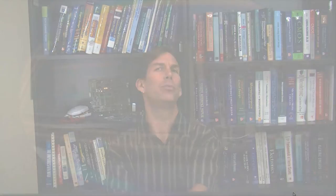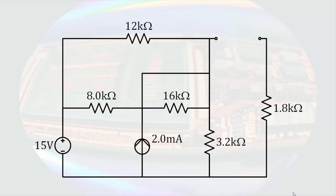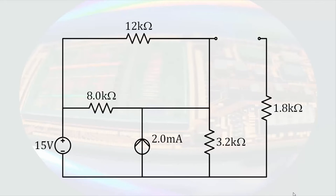Let's try a circuit that looks a little bit messier. Once again, let's determine the energy stored in all of the energy storage devices. This one may look more intimidating because of the number of components and the fact that there are three energy storage devices. But when we see that both sources are DC sources, we should know it is going to simplify at least a little bit. Under DC conditions, the inductors will behave as short circuits and the capacitor will behave as an open circuit. Furthermore, we notice that the 20-microhenry inductor, looking like a wire, shorts out the 16-kilohm resistor, so the 16-kilohm resistor can be ignored. We're trying to determine the energy stored in each device, so let's indicate the quantities we need.